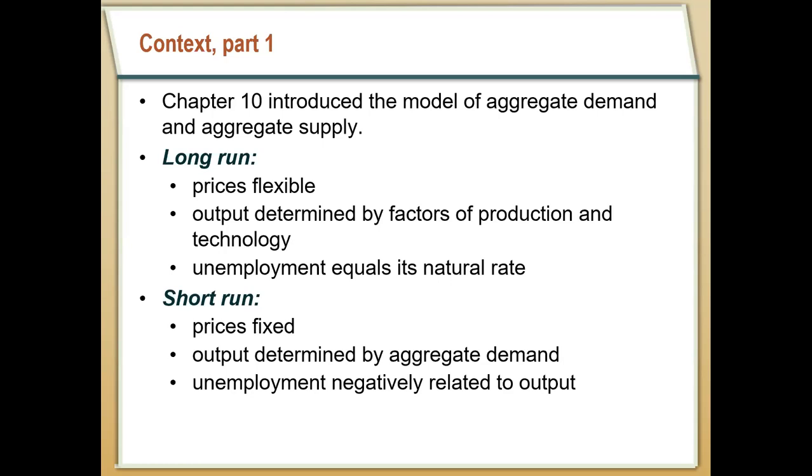And because changes in aggregate demand move output in the short run, that means unemployment was negatively related to output. So if output went down, unemployment was naturally going to increase. Clearly if aggregate demand is this important in the short run, we need a pretty deep explanation for why aggregate demand is the way it is and what makes it move.